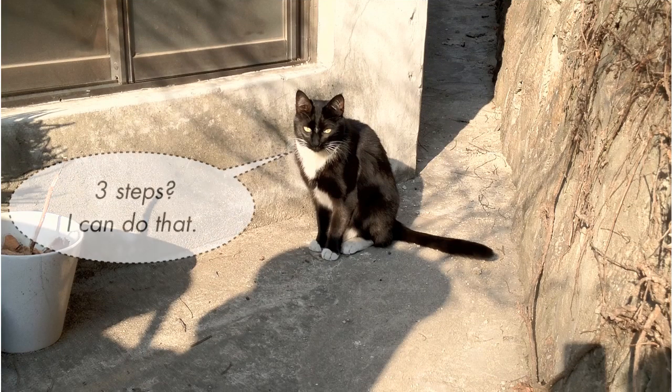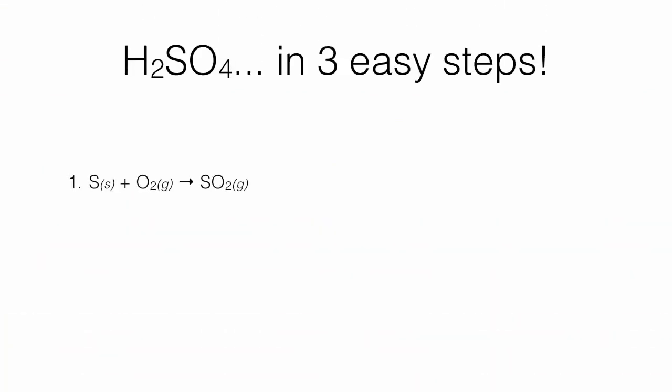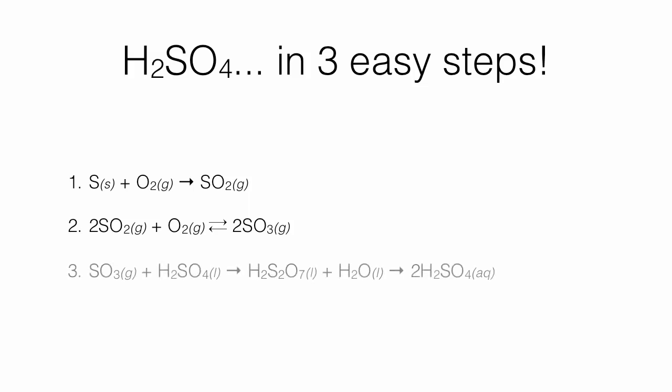We can make sulfuric acid in three easy steps. First, we take solid sulfur, mix it with oxygen, and get sulfur dioxide. Second, we take that sulfur dioxide, mix it with more oxygen, and get sulfur trioxide. Third, we want to mix sulfur trioxide with water to produce sulfuric acid. However, water and sulfur trioxide mix very energetically — it's explosive and dangerous in a factory. So instead, we mix our sulfur trioxide gas with liquid sulfuric acid we already have. This produces an intermediate, H2S2O7, which we can then safely mix with water to finally get our sulfuric acid. Notice we have two moles of sulfuric acid coming out on the far right and only one mole going in on the left, so we're still producing sulfuric acid overall.